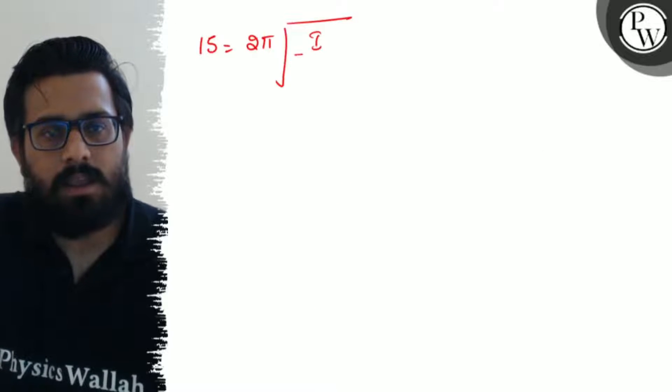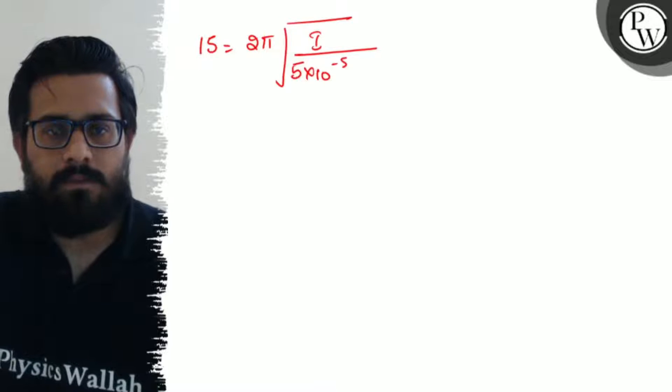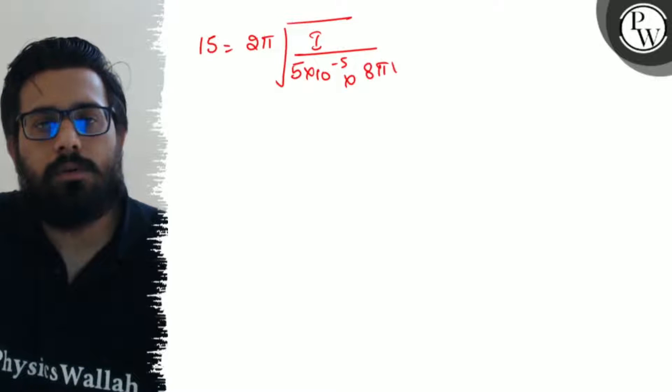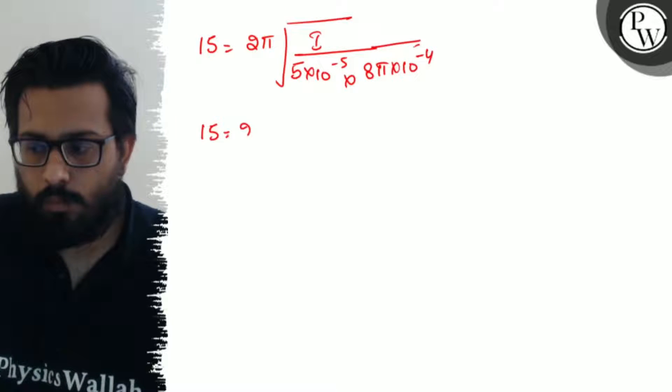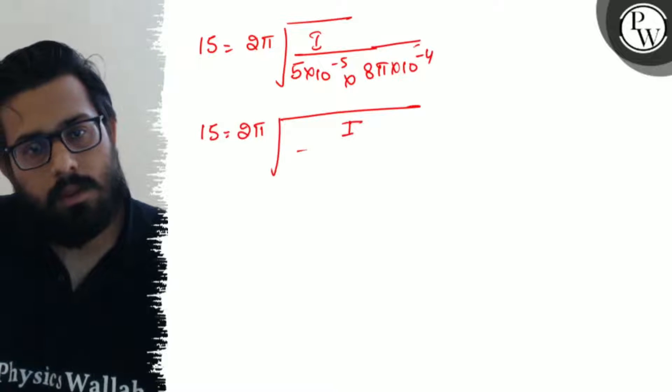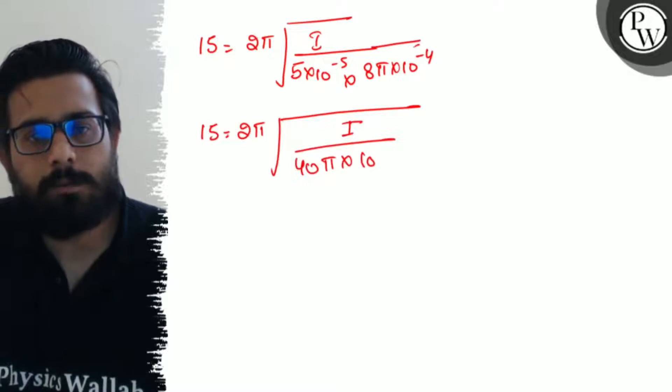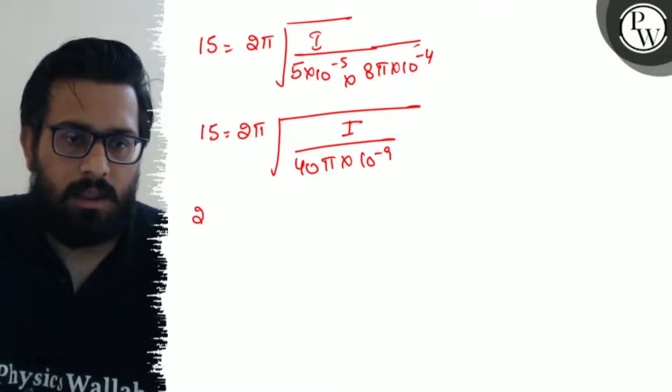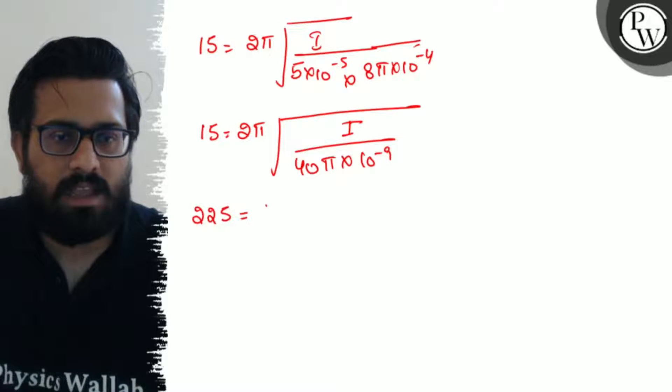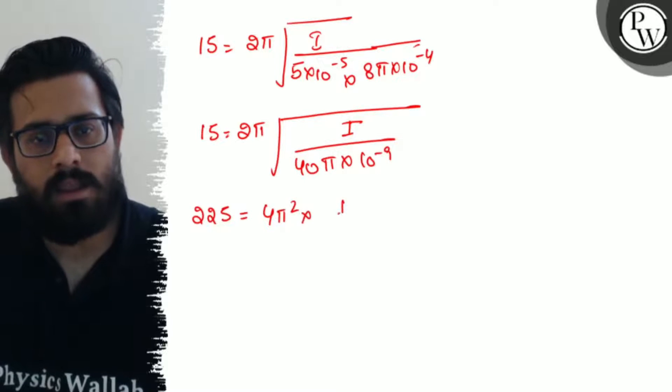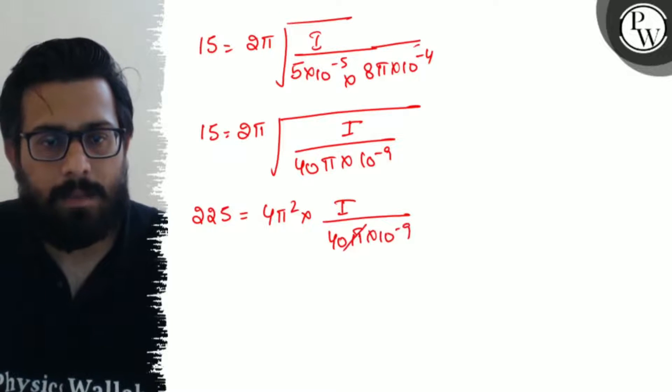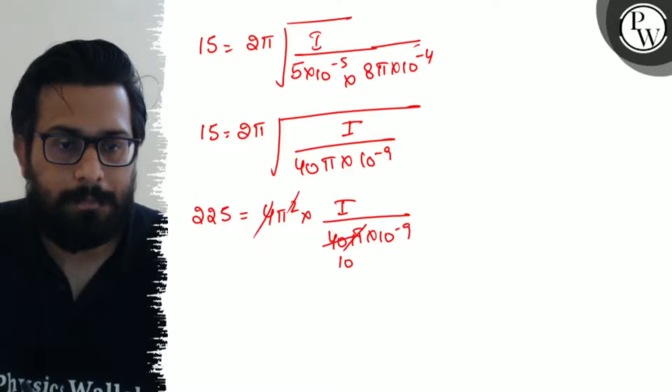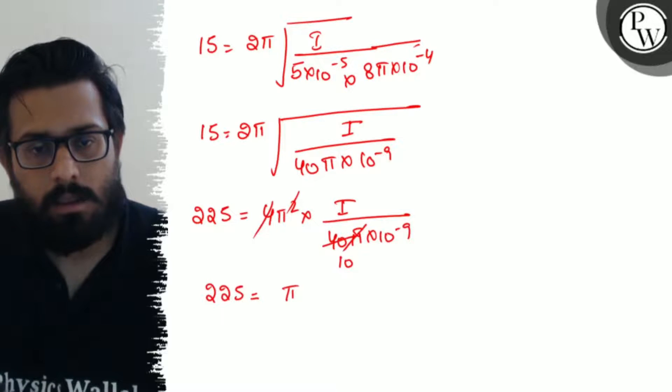Substituting the values: 15 = 2π√(I / (5 × 10^-5 × 8π × 10^-4)). Squaring both sides and simplifying: 225 = 4π² × I / (40π × 10^-9). So 225 equals π times I divided by 10^-8.